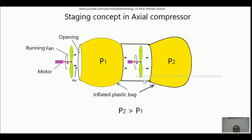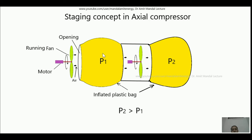Now, what is the staging concept in an axial compressor? Air is made to flow by this fan into the first plastic bag, where pressure rises to P1. That high-pressure air then passes to a second passage where a second rotor — another fan — adds more kinetic energy, and the air reaches a final bag at pressure P2. P2 is greater than P1 because the second stage builds on the pressure already established by the first. This is what is called staging.